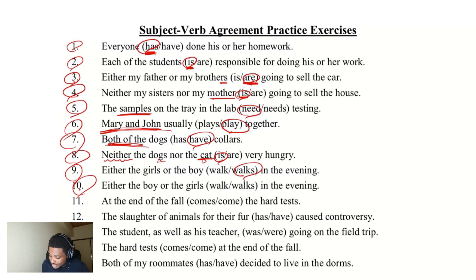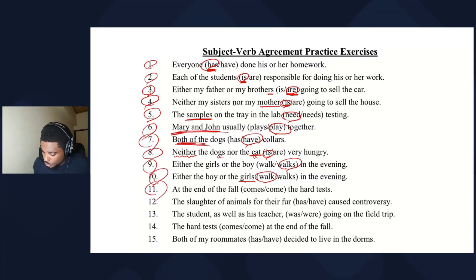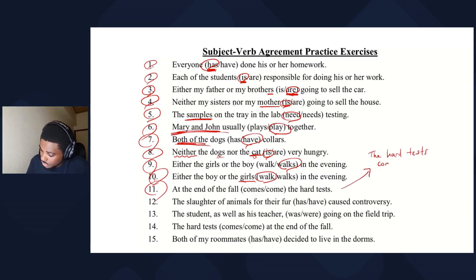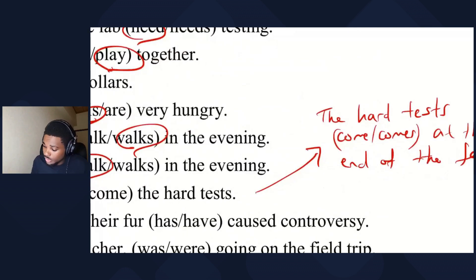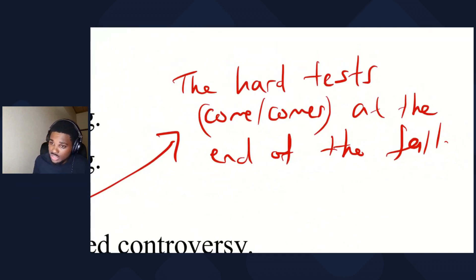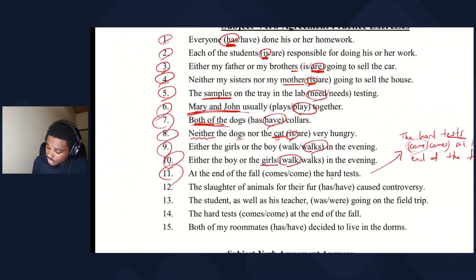Number ten: either the boy or the girls — this time we consider 'girls,' so 'walk.' Number eleven: at the end of the fall, come or comes, the hard tests — rearrange: 'the hard tests come or comes at the end of the fall.' The subject is 'the hard tests,' plural, so 'come.'